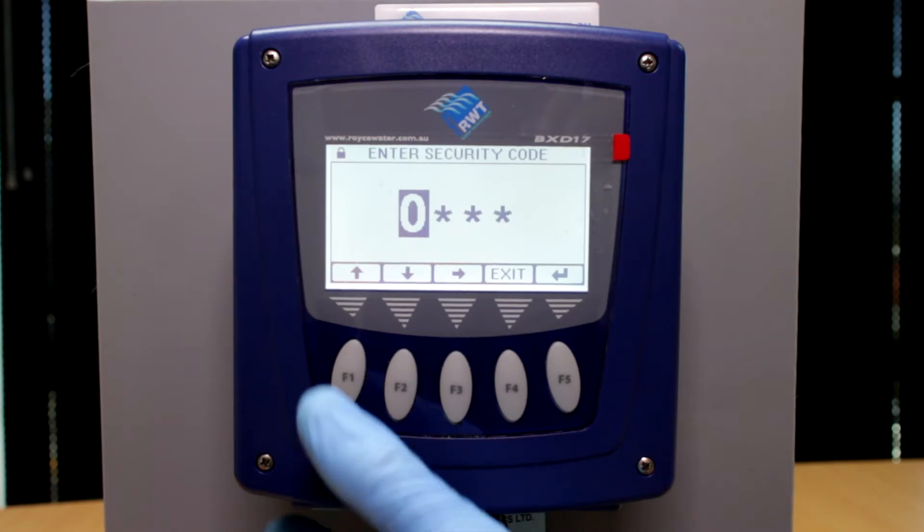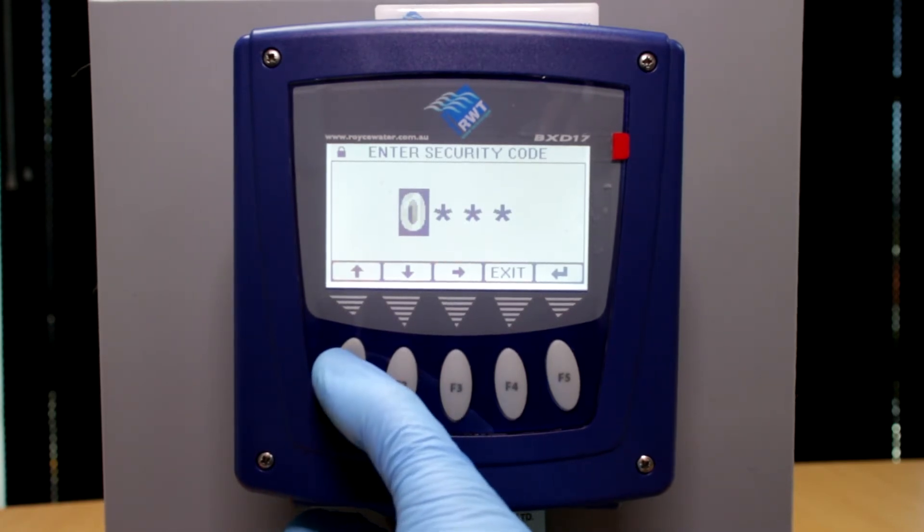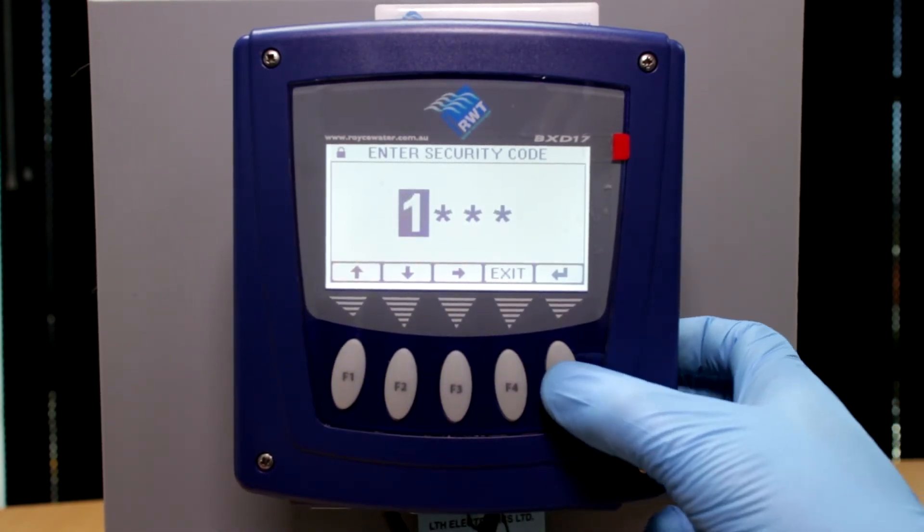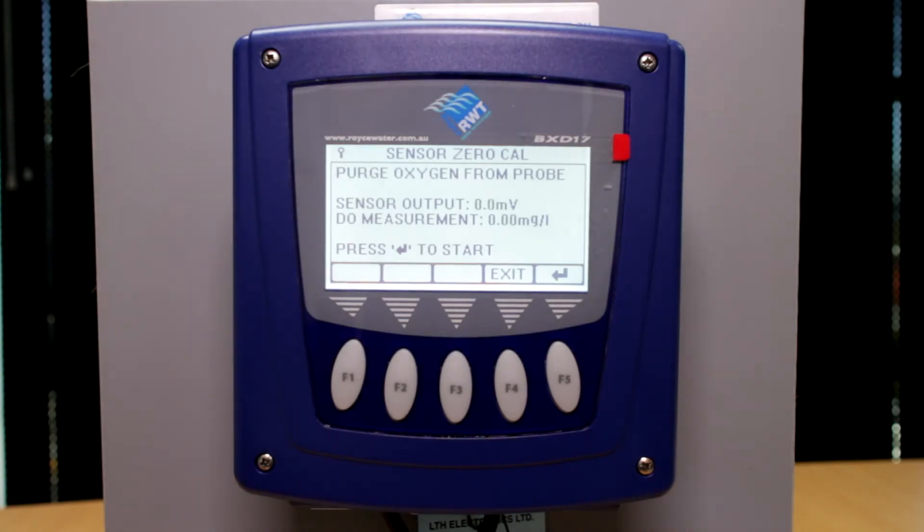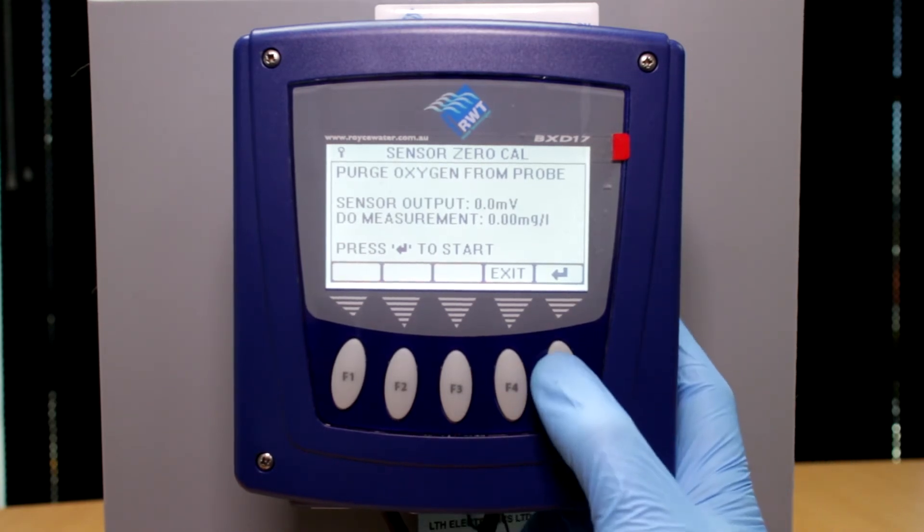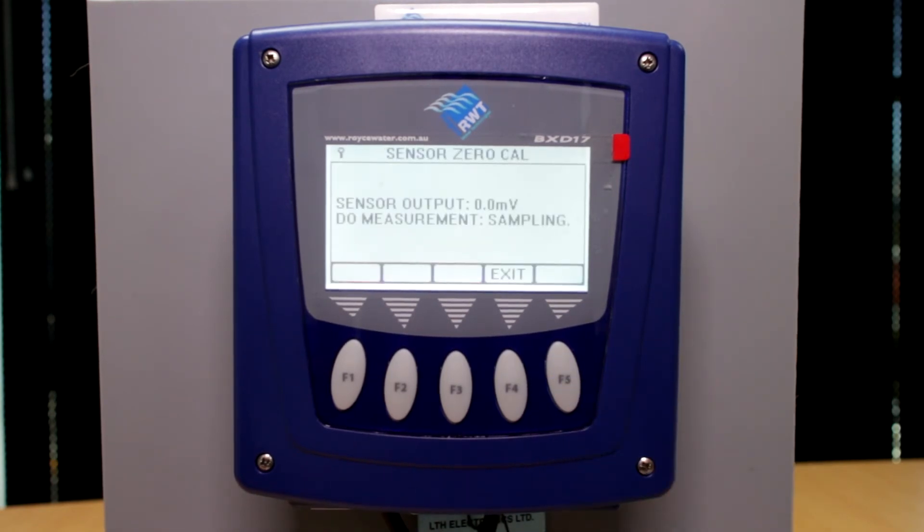The security code is 1. Push F1 until 1 appears, push enter. Instructions are to purge oxygen from the probe - this means to place the probe into the zero DO solution or RAS or WAS. You'll notice the millivolt signal should start to drop. Your DO probe should hit 0.0 millivolts or very close to. Once this happens, push F5 to start the calibration process. The BXD is now sampling the zero DO condition.